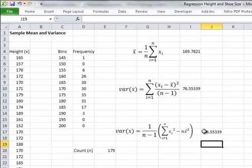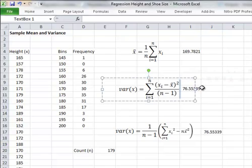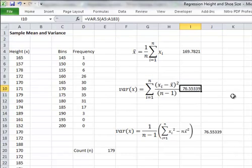And I get exactly the same result as I did by applying the standard formula var.s here. So you can calculate the variance by hand. It's not really recommended, especially if you have a large sample.